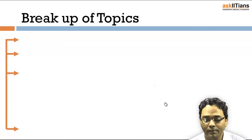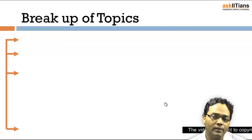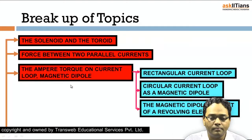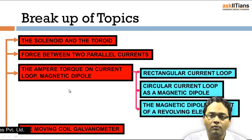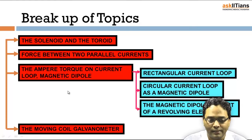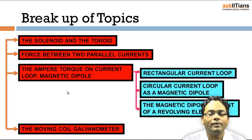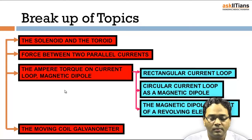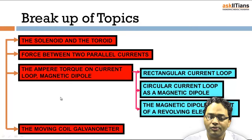Let's give a brief overview of what we are going to discuss. First, we'll understand about the solenoid and the toroid — what is the difference between them. Then we'll understand the force that acts between two current-carrying conductors when the current is moving in the same direction — the force is attractive — and in opposite directions in parallel wires, the force is repulsive. We'll use the right-hand rule for finding directions. Then we'll talk about Ampere's law, which results in a torque on the current loop and also produces a magnetic dipole.